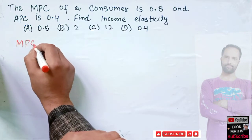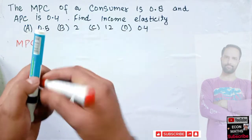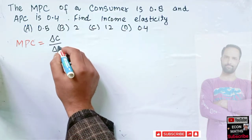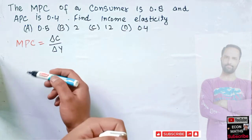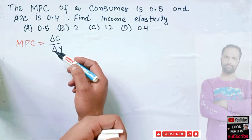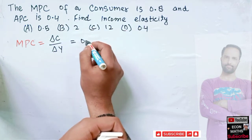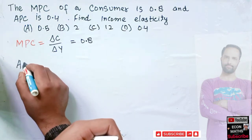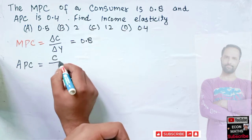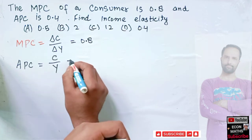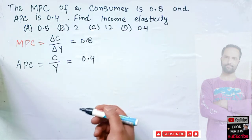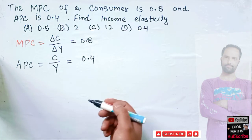We are given the marginal propensity to consume of a consumer. MPC is simply change in consumption upon change in income — that is, del C upon del Y — and that is given as 0.8. Also, average propensity to consume is simply consumption upon income, and the value of APC is 0.4.